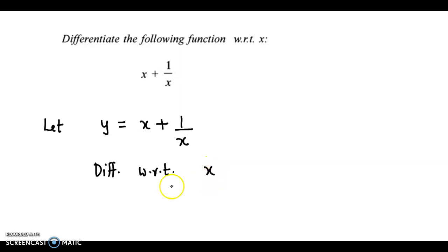So differentiating with respect to x, we obtain dy by dx is equal to. Now derivative of x is 1 plus derivative of 1 upon x is minus 1 upon x square.